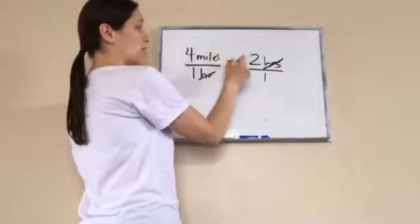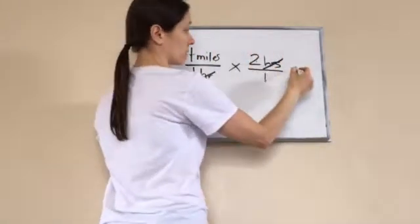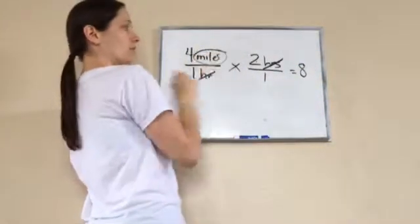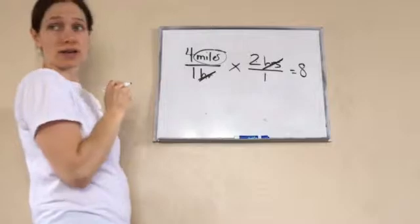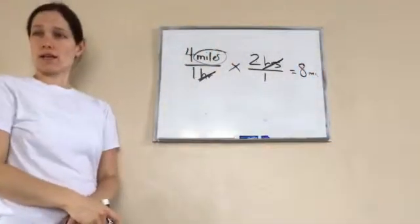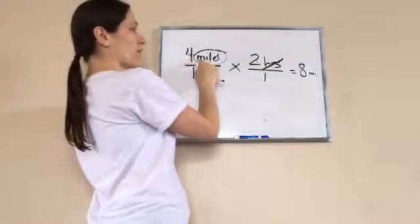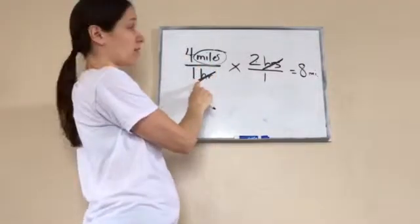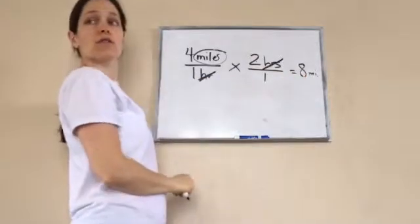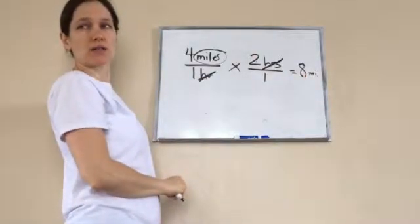So, now, 4 miles times 2 is eight. And what do we have left? Miles. The hours have been crossed out. So, we write miles. So, if I went four miles per hour, one hour, and I did this for two hours, how long would I walk? Eight miles. Very good. You see what we did? Yeah. It's just learning how to cancel out the units.